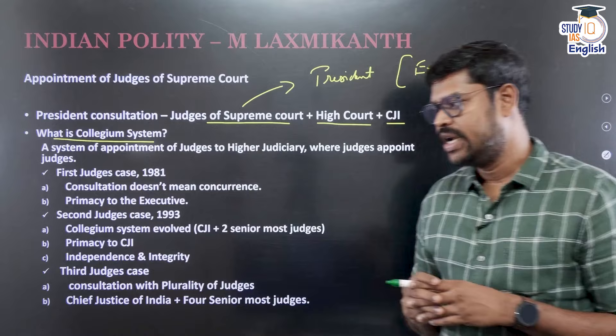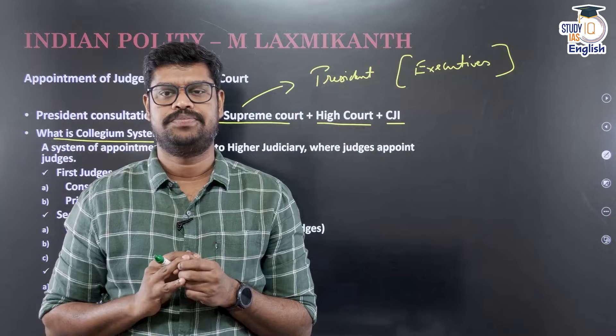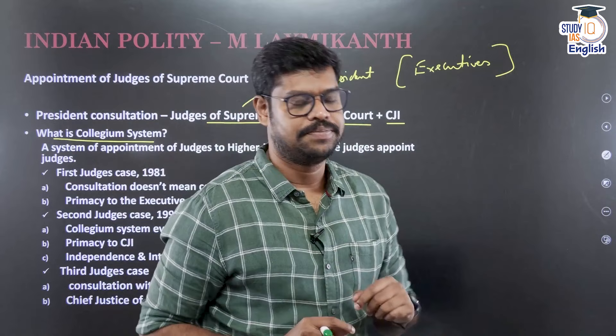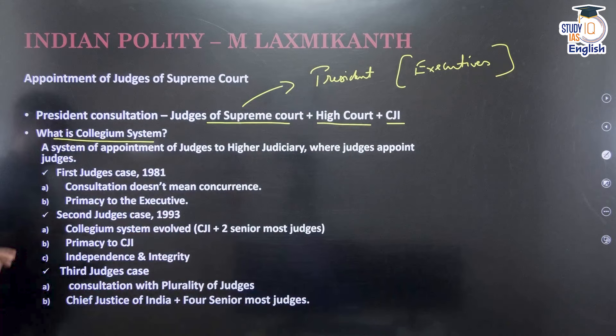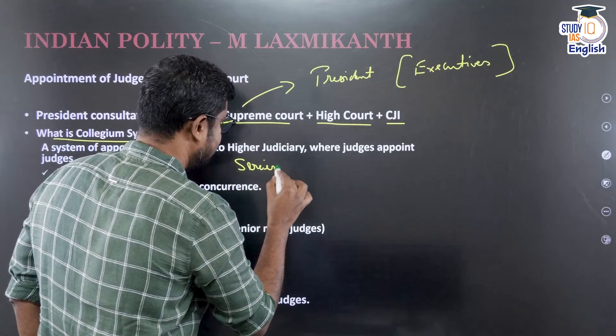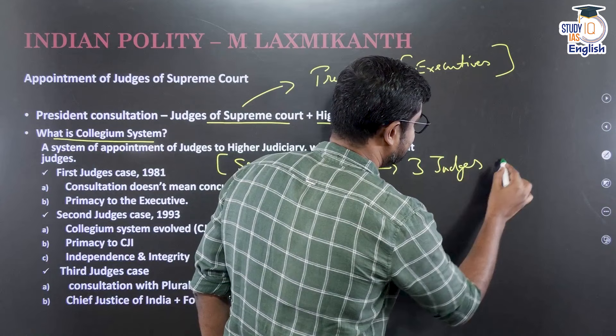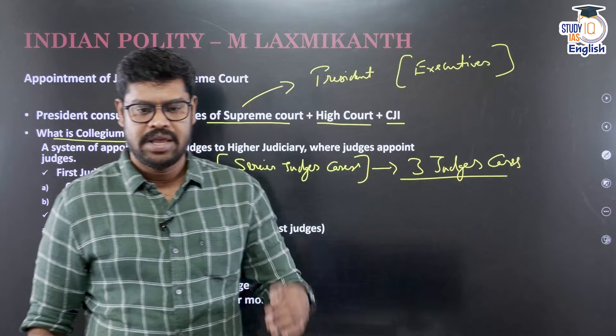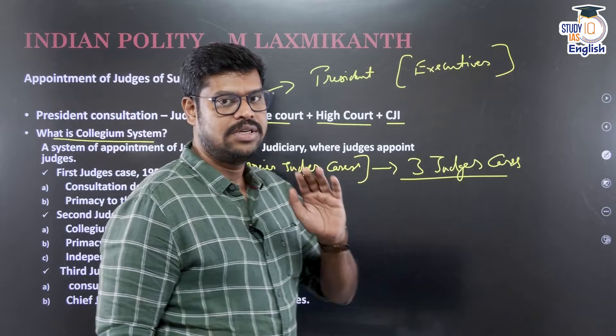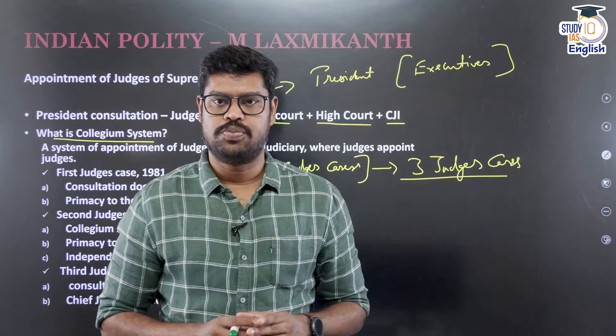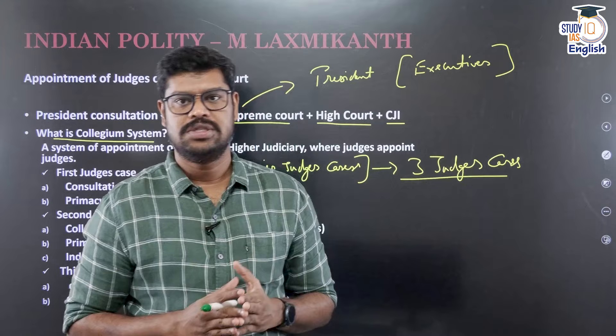How did the Collegium system come into existence? It evolved through a series of three judges cases. In each case the Supreme Court came out with certain interpretations, and ultimately in the third judges case it was finalized how judges shall be appointed to the Supreme Court — a system based on the judgments given in those three cases. For examination purposes, these are referred to as judges case 1, judges case 2, and judges case 3.